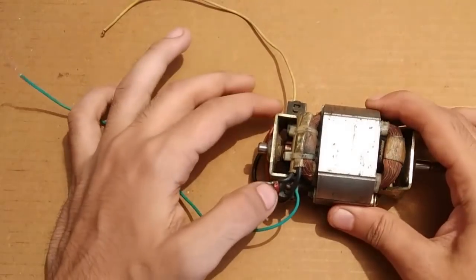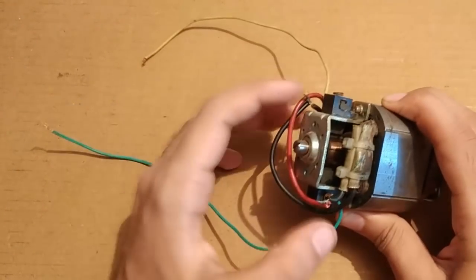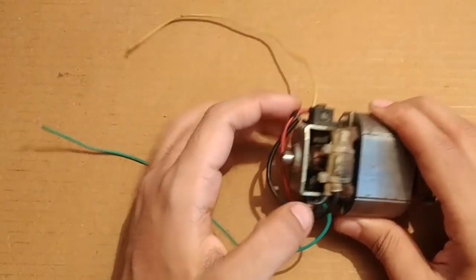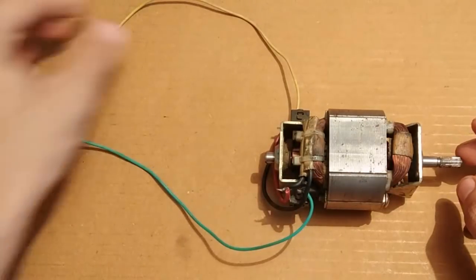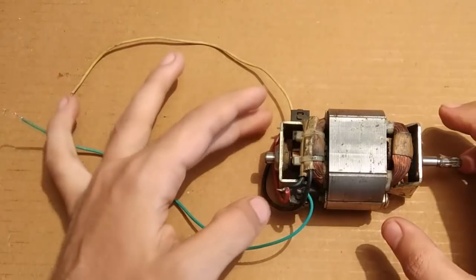Now what you have to do is simply give a small input supply to these two terminals. And when you will rotate this shaft, you will get an output voltage and current on these two terminals. So I am going to do that.